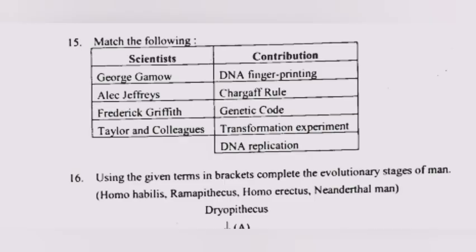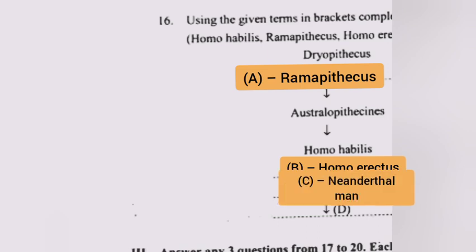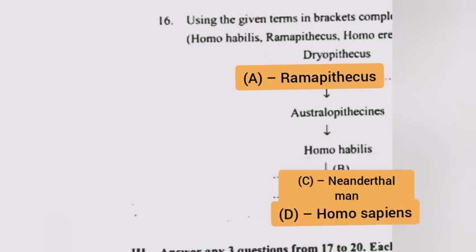Question 16: Using the given terms in brackets, complete the evolutionary stages of man. Answer: a) Ramapithecus; b) Homo erectus; c) Neanderthal man; d) Homo sapiens.